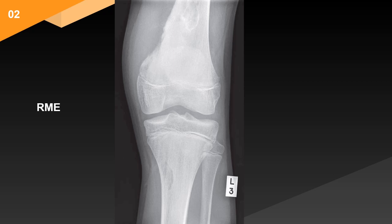In the lateral aspect of the proximal tibial metaphysis, there is a well-defined lucent lesion. The margins are clearly defined but not sclerotic, with a narrow zone of transition. It does not appear expansile and there is no visible matrix calcification. Within the lesion, there is no periosteal reaction, soft tissue mass, or other aggressive feature.